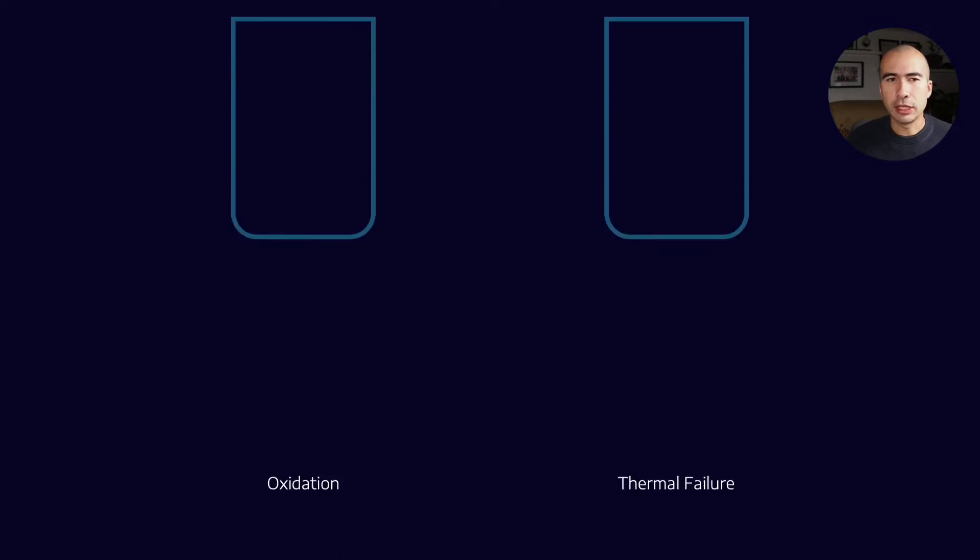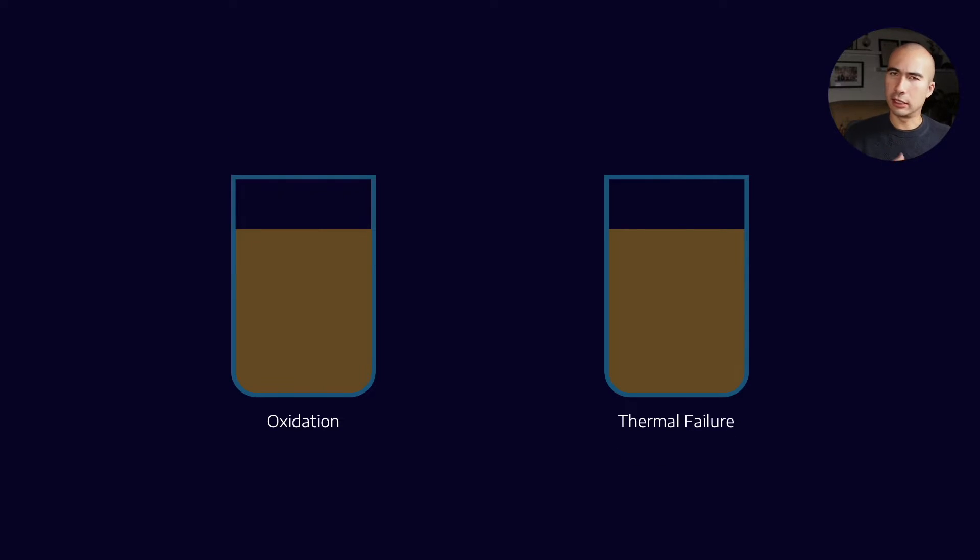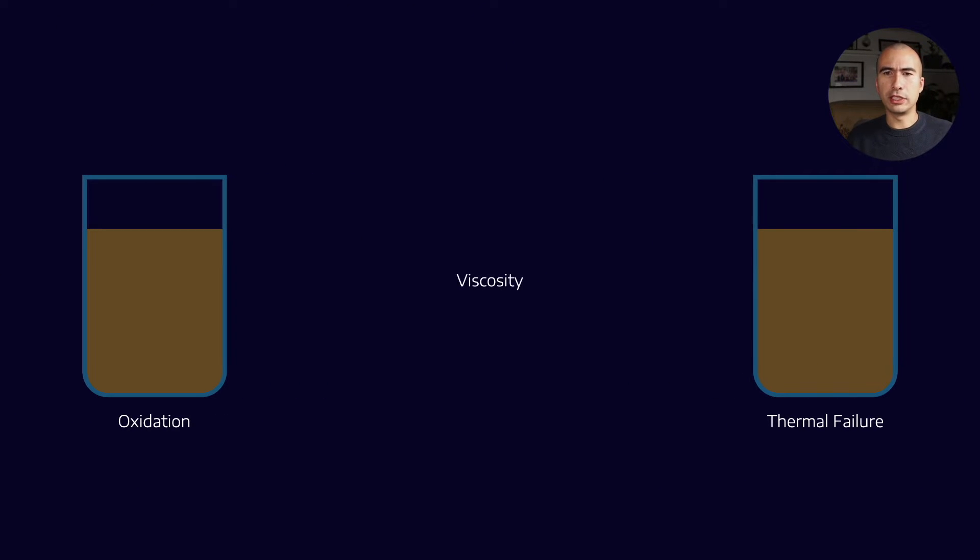Let's say for example if I had two samples, one had experienced oxidation and one had experienced thermal failure, then what kind of differences could I expect to see? Well it goes down to the physical characteristics of the breakdown. If you look at what would happen to the viscosity under oxidation and thermal failure conditions, we know that generally when lubricants oxidize they thicken. We expect the viscosity to increase.